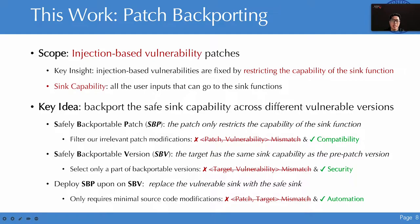Second, we identify a safely backportable version (SBV) to ensure security after patch deployment. The SBV is the target version that has the same sink capability as the pre-patched version, addressing the mismatch between target version and vulnerability. Third, we deploy SBP on SBV by replacing the vulnerable sink with the safe sink, which only requires minimal source code level modifications to fix the vulnerability, addressing the mismatch between the patch and the target version.